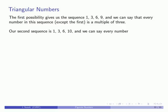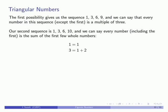Well, let's take a look at our second sequence. Our second sequence is one, three, six, and ten. And here the pattern is a little bit less obvious, but if I dig down deeper, I can say that every number, including the first, is the sum of the first few whole numbers. So one is equal to one, three is one plus two, six is one plus two plus three, ten is one plus two plus three plus four.